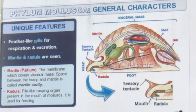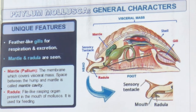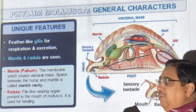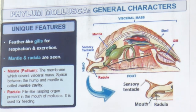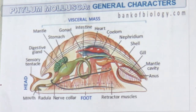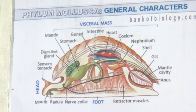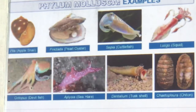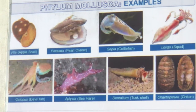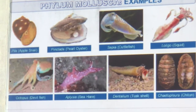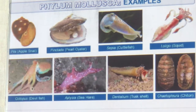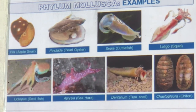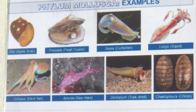The radula is unique — a file-like rasping organ used for feeding, making small particles of food. The mantle releases secretion, and if sand gets in, it coats it layer by layer to form pearls. Examples: Pila (apple snail), Pinctada (pearl oyster), Sepia (cuttlefish), Loligo (squid), Octopus (devilfish), Aplysia (sea hare), Dentalium (tusk shell), and Chiton (sea mouse).